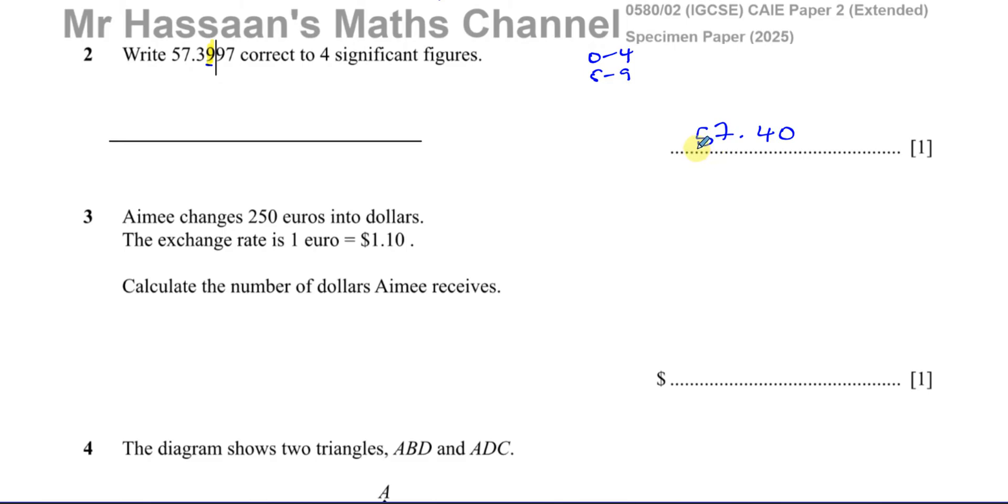So there's a few other issues I want to mention. Supposing the question was 0.057399. In this case, the first significant figure would not be the zero, nor would it be this zero. It would be this five. So then you have one, two, three, four, and that would therefore be the fourth significant figure. And you'd have to write the answer as 0.05740.